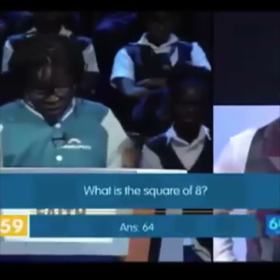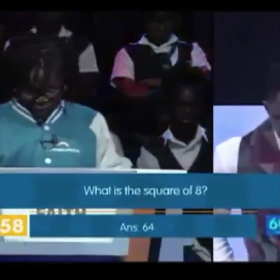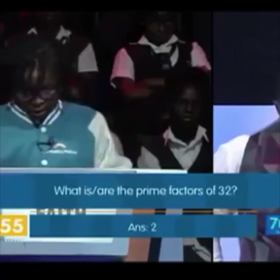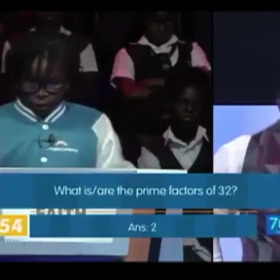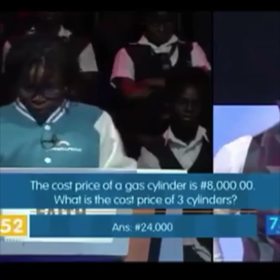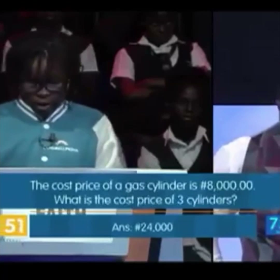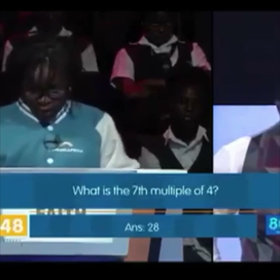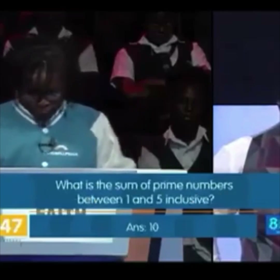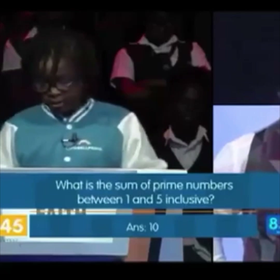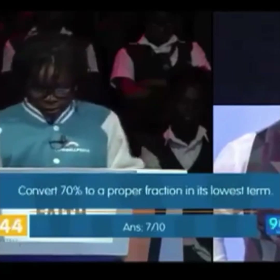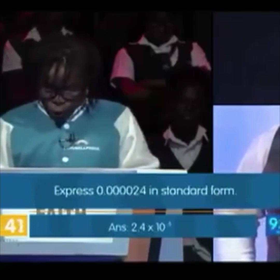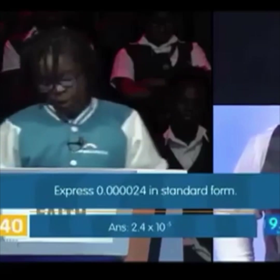What is six to four? Correct. Multiply one over three by five over six. Correct. What are the prime factors? Correct. The cost price of a gas cylinder is eight thousand, four thousand. Correct. What is seven eight? Correct. Convert 70 percent — seven over ten. Correct.